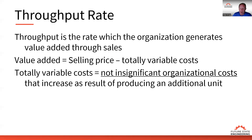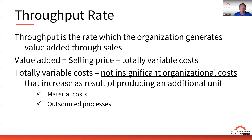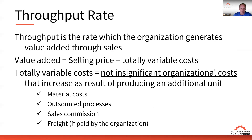Totally variable costs are not insignificant organizational costs that increase as a result of producing an additional unit for sale. For example, people argue that by producing one more unit we generate the use of more electricity, but the amount of electricity to make one additional unit is so insignificant it's not even worth measuring. The totally variable costs I see in most organizations are: materials, outsourced processes, sales commissions, and freight paid by the organization. All other costs are fixed, especially within the relevant range of the organization.